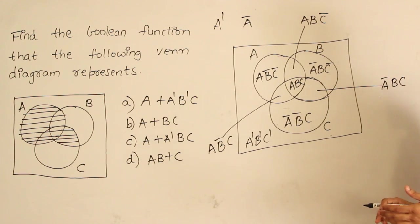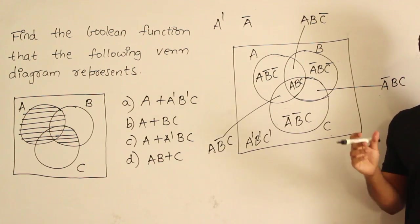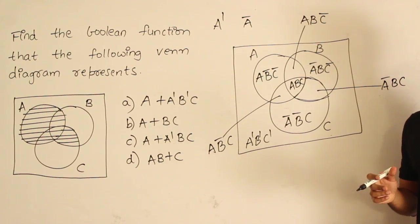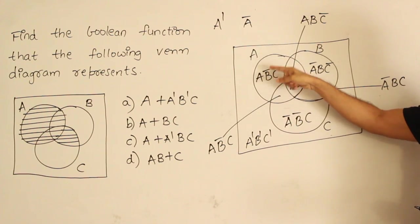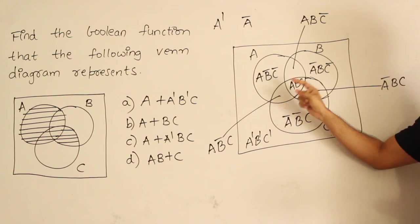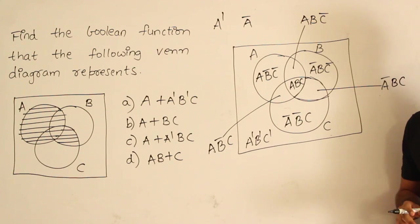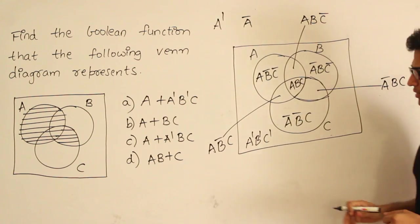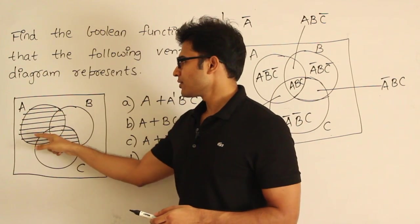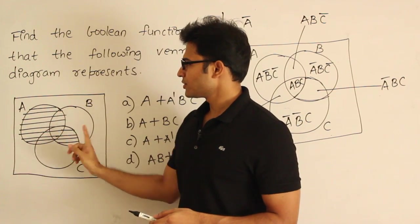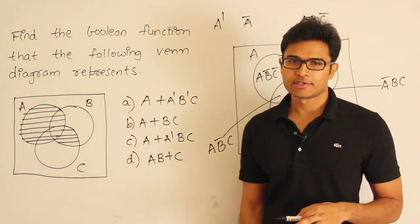A function is nothing but a collection of minterms — one way of representing it is to collect the minterms for which the function gives output 1. So one way to represent a function using a Venn diagram is to shade the areas where the function takes value 1 and leave the areas where it does not. For example, check this — two areas are shaded. What is the Boolean term this represents?